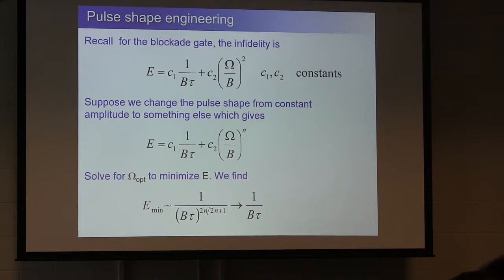How can we get that? Well, so let's think about changing the pulse shape. Remember, for the blockade gate, the infidelity is this one over V tau spontaneous emission term, and then this omega over V squared blockade leakage term. Okay. Where C1 and C2 are some constant pre-factors. Now, let's suppose I change the pulse shape. So it's not a square pulse, but it's some other pulse shape. And let's imagine that pulse shape is such that I'm still going to get something like a one over V tau spontaneous emission error. That doesn't depend on the pulse shape. But the blockade leakage can drastically depend on the pulse shape. And let me imagine it's no longer omega over V squared, but omega over V to some power N times tau. Now, I'm going to solve for omega to minimize the error and plug in, and what I'll find is that the error minimum is now one over V tau to this power, which as N goes to infinity, is my one over V tau, which is indeed my optimum scaling.